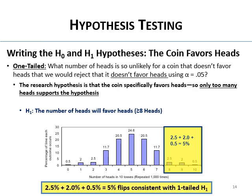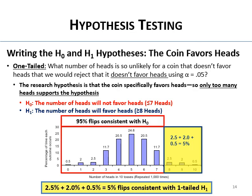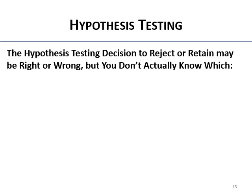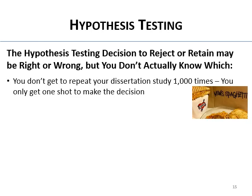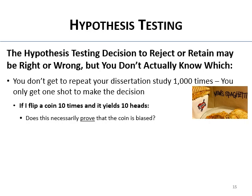The alternative is that the number of heads will favor heads — we'll get so many heads it's really unlikely by chance, using alpha 0.05. If we get eight or more heads we say the coin is biased in favor of heads. Seven or fewer is consistent with the null — the coin is either not biased or not biased in favor of heads. The decision to reject or retain: one of them is right and one is wrong, but you don't actually know that in your study. That's what replication is for.